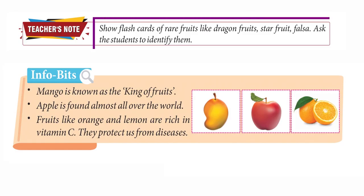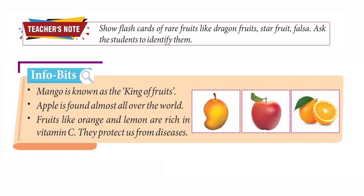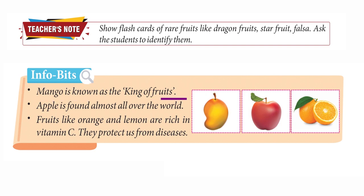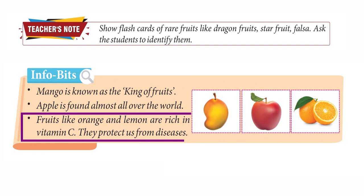Teacher's Note: Show flashcards of rare fruits like dragonfruit, starfruit, and balsam. Ask the students to identify them. Info Bits: Mango is known as the king of fruits. Apple is found almost all over the world. Fruits like orange and lemon are rich in vitamin C and protect us from diseases.